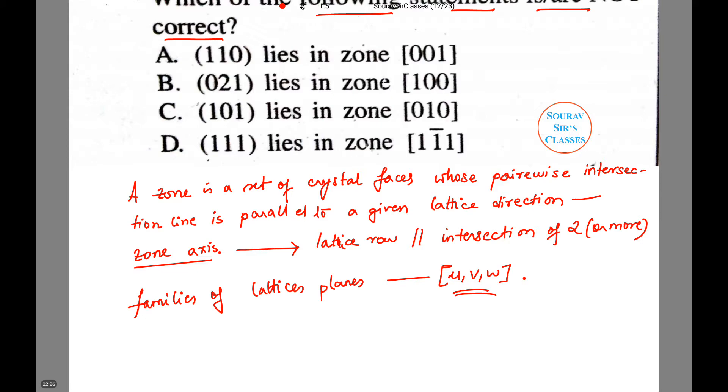This is denoted by (u, v, w). A zone axis is parallel to a family of lattice planes of Miller indices (h, k, l).